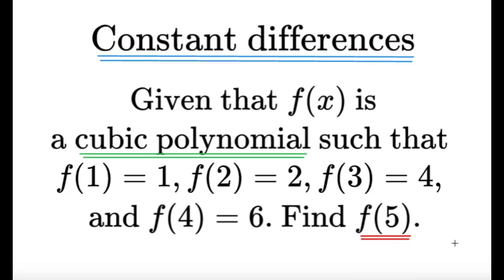For this one, given that f(x) is a cubic polynomial, such that f(1) equals 1, f(2) equals 2, f(3) equals 4, and f(4) equals 6, find the value of f(5).